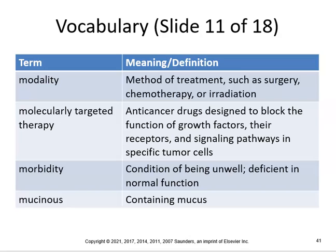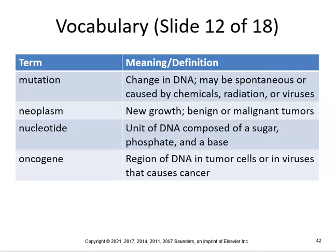Modality is the method of treatment, such as surgery, chemotherapy, or irradiation. Molecularly targeted therapy uses anti-cancer drugs designed to block growth factors, their receptors, and signaling pathways in specific tumor cells. Morbidity is the condition of being unwell — people with COVID-19 who have comorbidities like diabetes or lupus face greater difficulty. Mutation is a change in DNA, which may be spontaneous or caused by chemicals, radiation, or viruses. Neoplasm is a new growth, benign or malignant. Nucleotide is a unit of DNA composed of sugar, phosphate, and a base. Oncogene is a region of DNA in tumor cells or viruses that causes cancer.